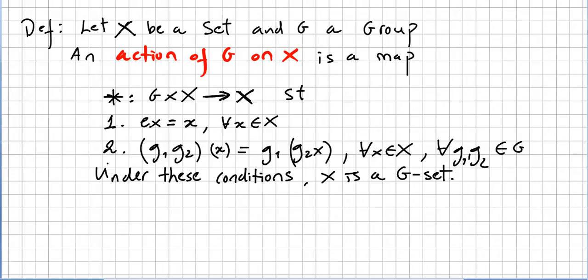And two: there is some kind of associativity here. (G1 G2) times X equals G1 times (G2 X). So this X will be an element in the set and G1 and G2 will be in the group.